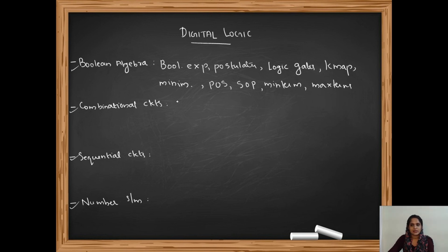Now, Combinational Circuits. Combinational Circuits includes adders, subtractors, multiplexers or also known as Mux, then comes the demultiplexers or Demux, and finally the Encoder and Decoder.